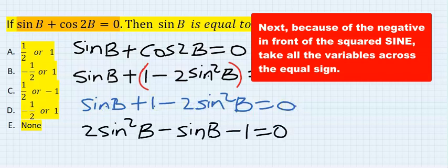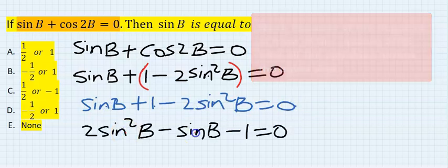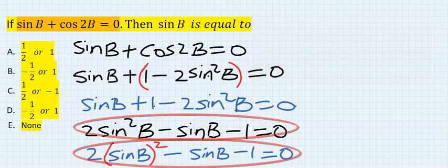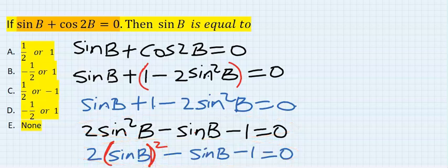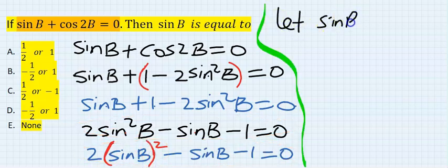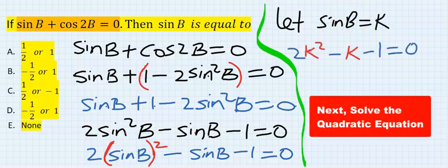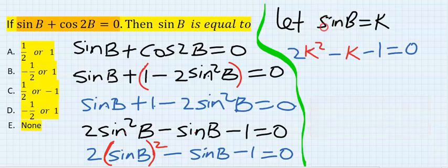Now this can be written as, is just the same thing just a rearrangement. Next let sin B be equal to K. Any place I see sin B I will replace it with K.